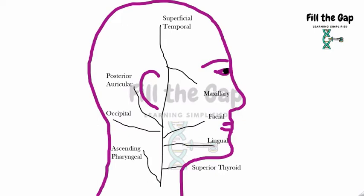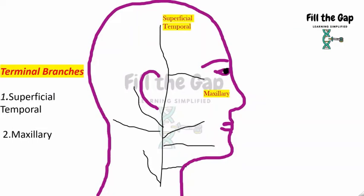This is how they look like on our face. Now, the terminal branches are the superficial temporal and the maxillary. Why? Because external carotid artery goes from down all the way up to the top of the head. So, at the end or the terminal, there's two branches. That is the superficial temporal and the maxillary. So they become the terminal branches.